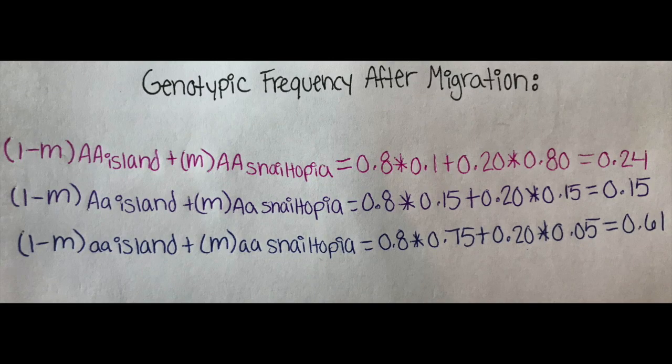Finally, we need to find the genotypic frequency of the island after migration. To do this, we do 1 minus m times the allele frequency of the island, plus m times the allele frequency of Snail-topia. You repeat this for each genotype.